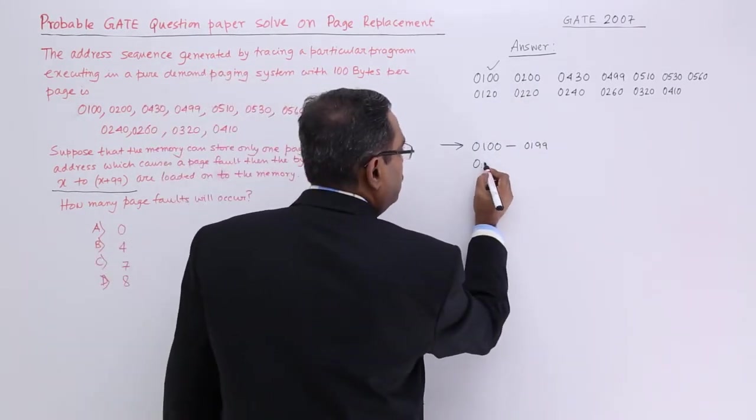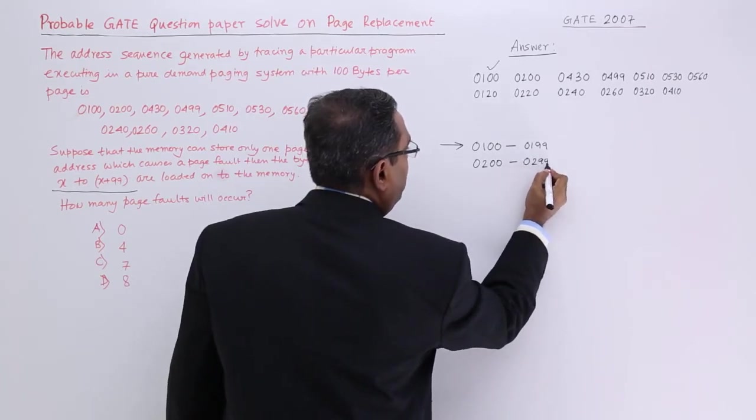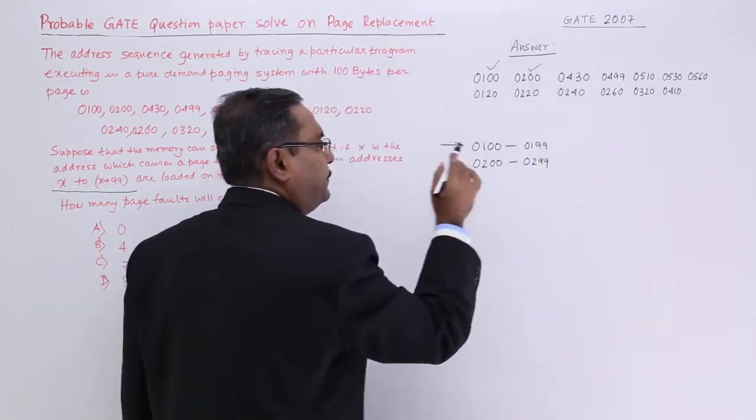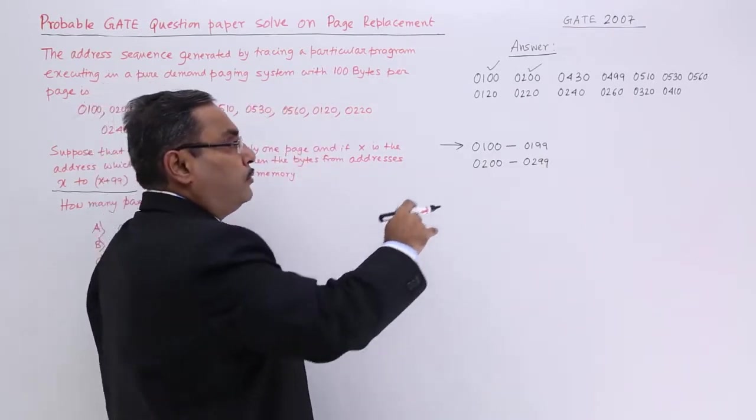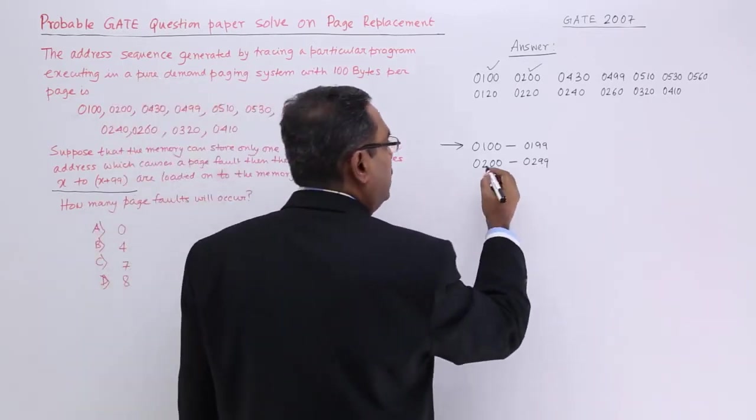It has just missed it because it is 0199 and it is 0200. So again I shall have to load that one. 0200 to 0299 will get loaded. Another page fault has occurred. Now, 430 is not falling in this range.